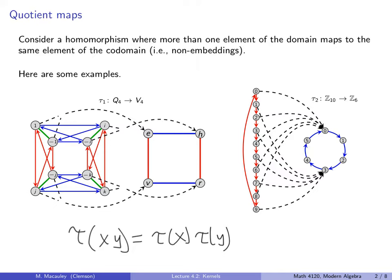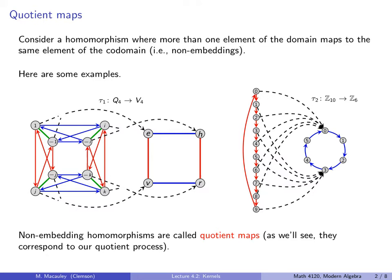On the right we have a homomorphism from the group Z10 to the group Z6. That is the codomain, although the image of this homomorphism is the subgroup generated by 3 — the subgroup of two elements, 0 and 3. So both of these are quotient maps, although this one is onto and this one is not.